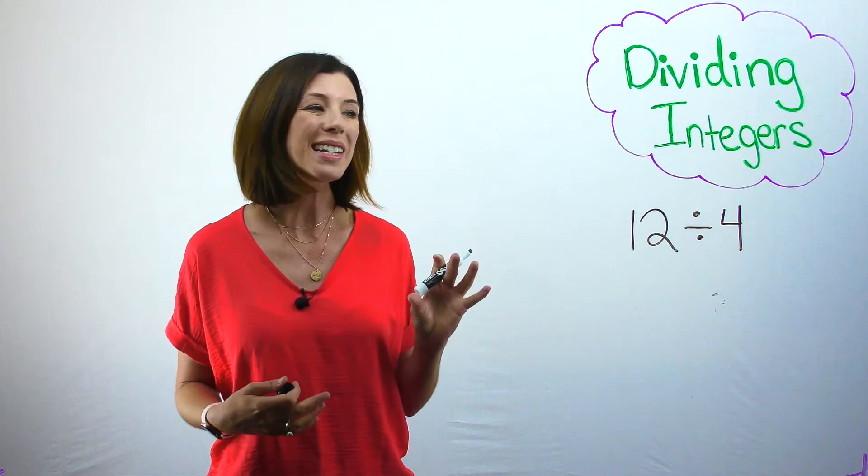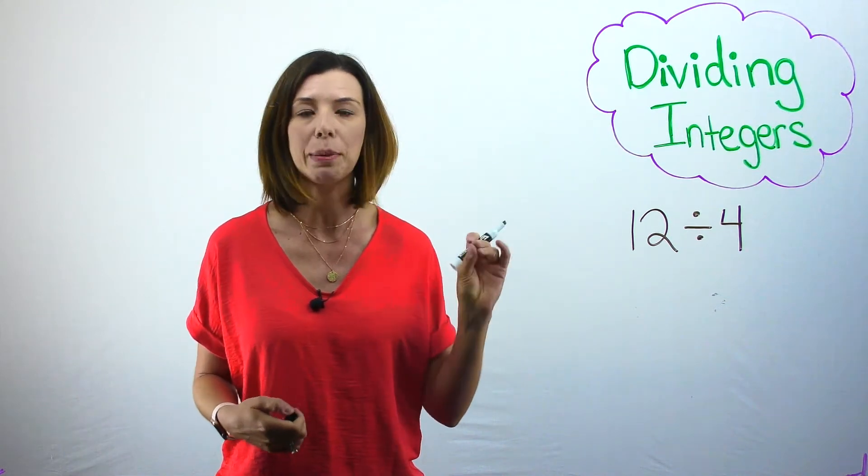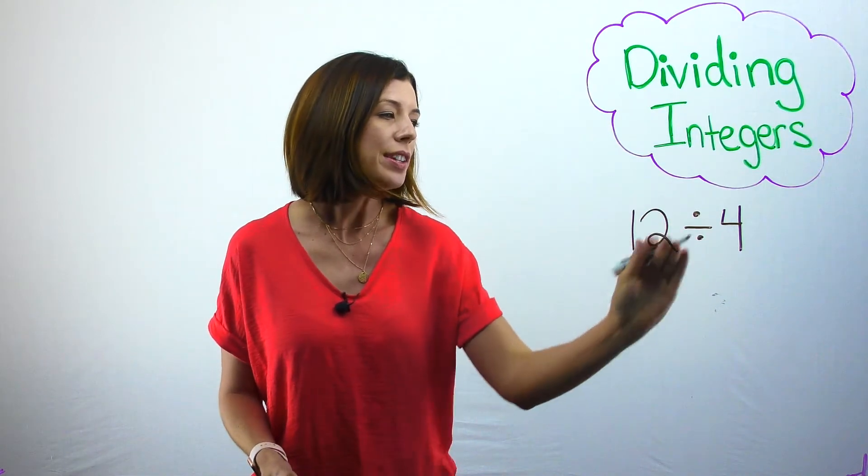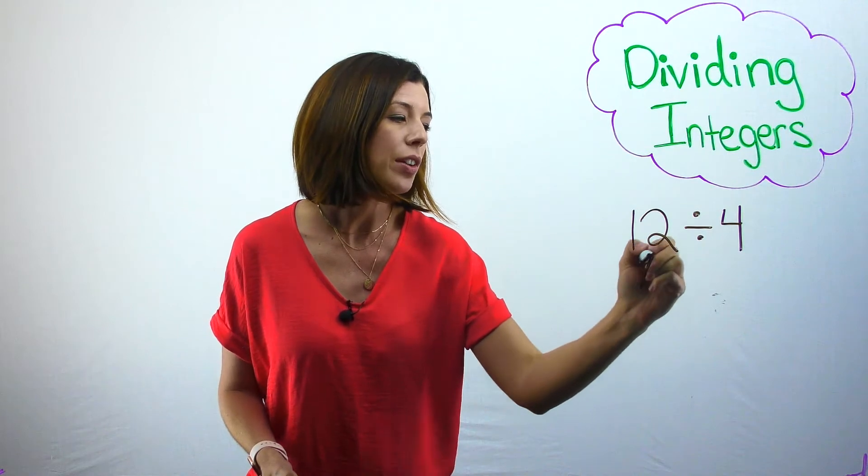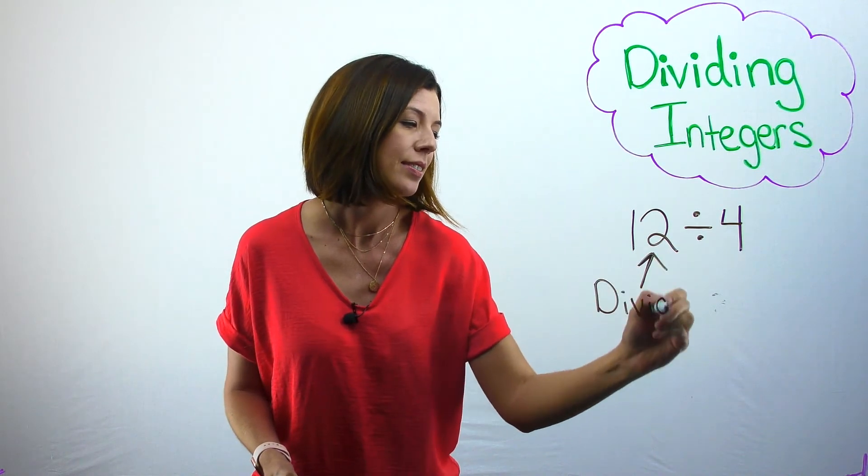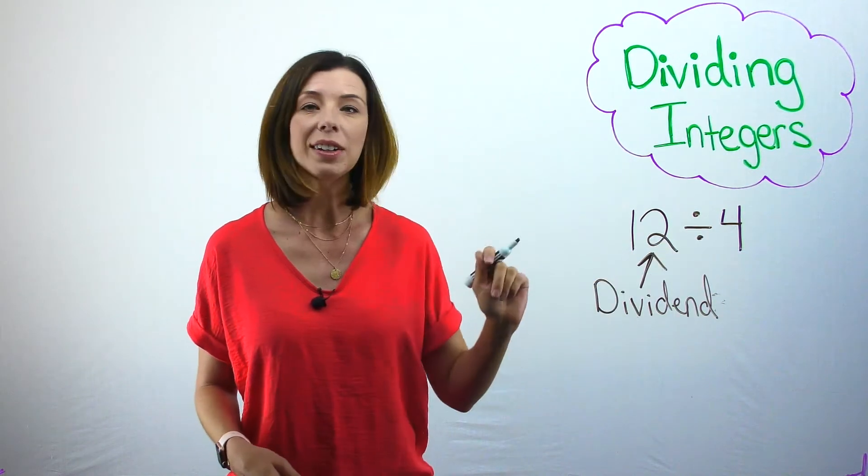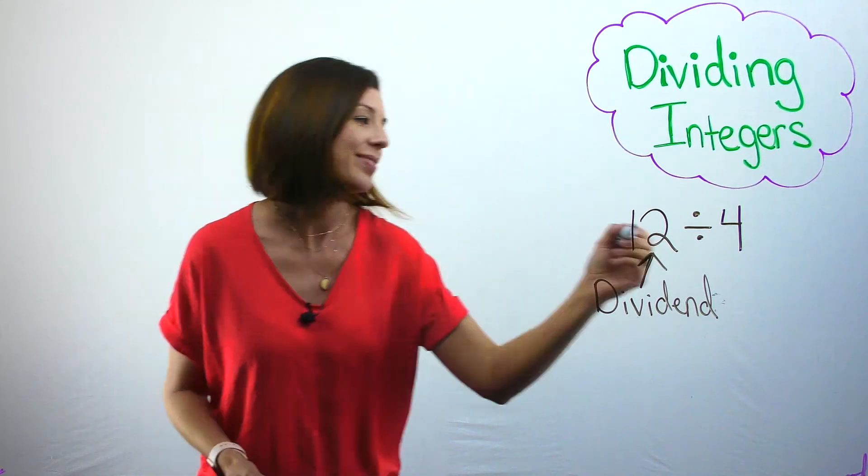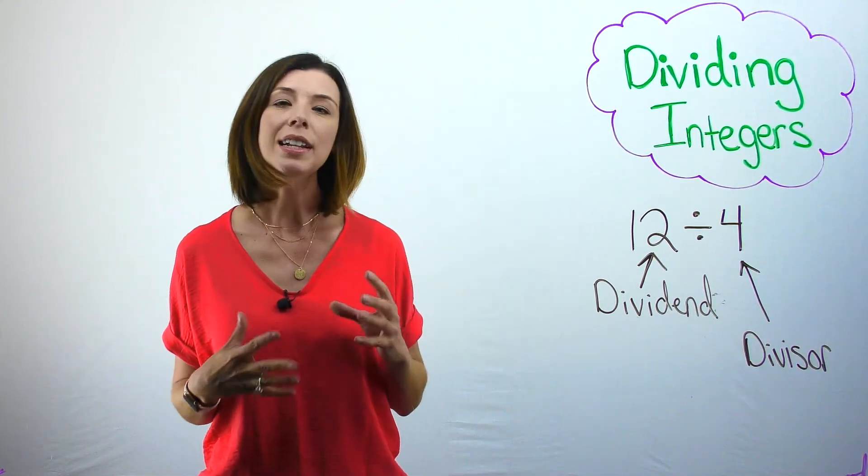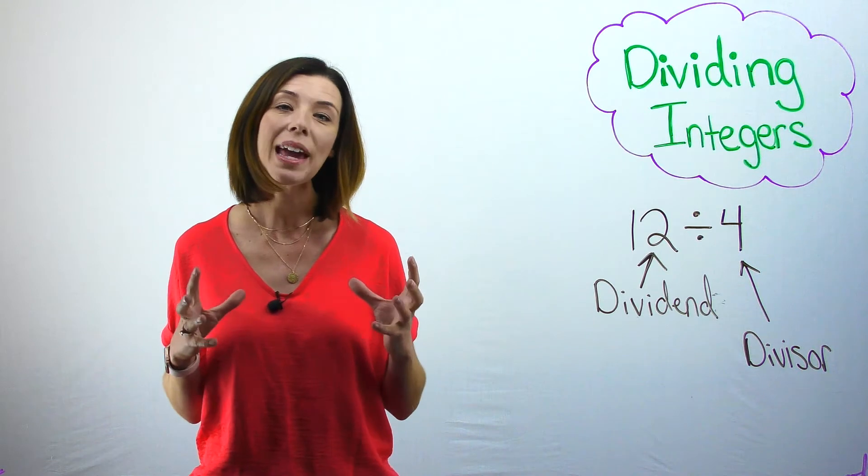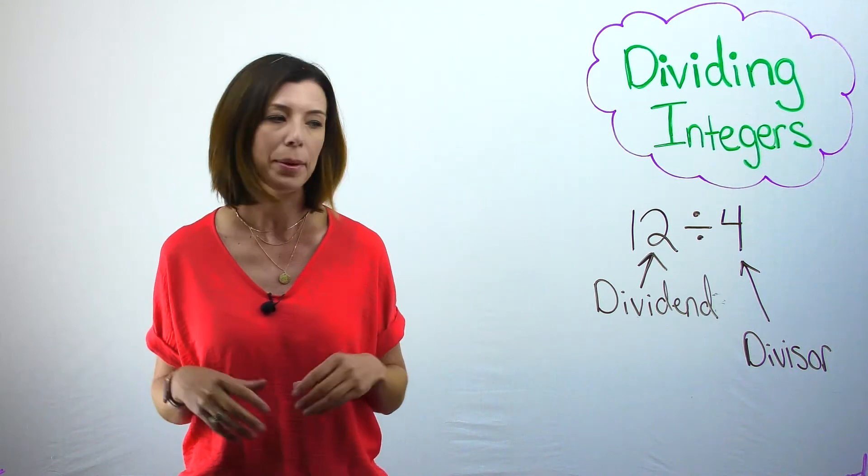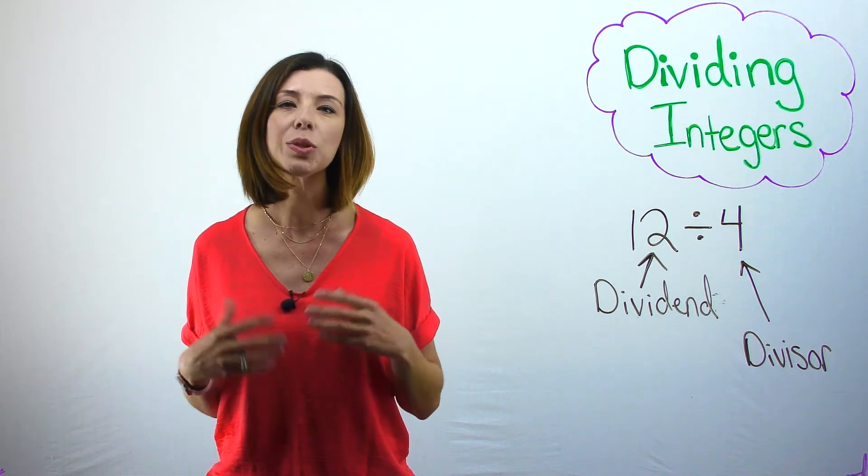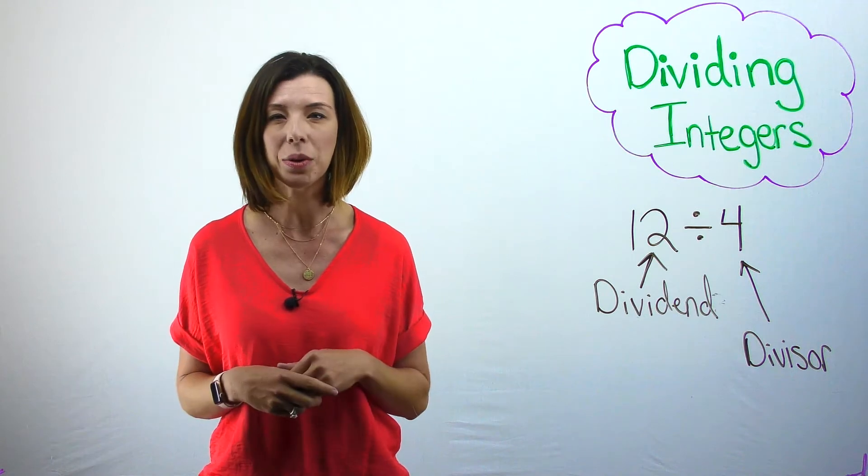Let's remember a few pieces and parts of a division expression. First of all, this number here, the 12, is called the dividend. The 4 here is called the divisor. Our dividend tells us how many items we have total that we need to divide up. Our divisor tells us what the group size is going to be.